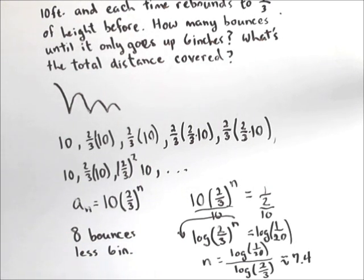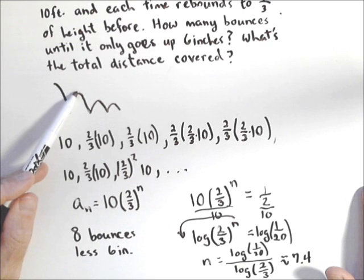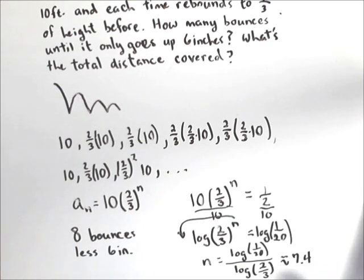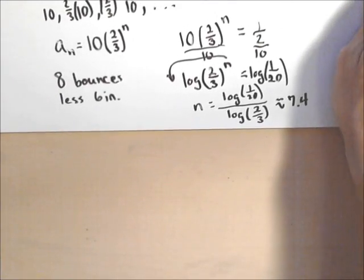Now we need to think about the total distance traveled. What we mean by that, it goes 10 feet down, then two-thirds of 10 feet up, then two-thirds of 10 feet down. So we're actually going to sum up the terms of our sequence for this, so let's get a little bit more space.